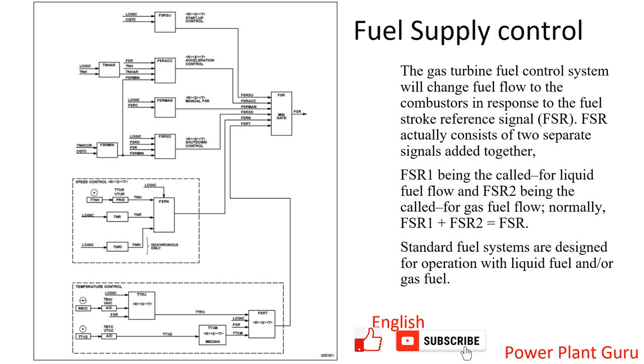Fuel stroke reference, normally called FSR, is a very important parameter in gas turbine terminology. FSR is basically a fuel supply rate and this FSR may depend on a lot of various parameters such as inlet air temperature control, machine loading, type of fuel, etc.